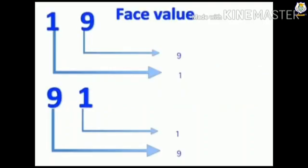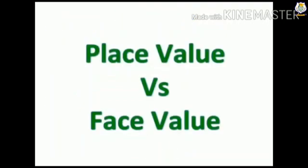The face value will be same value as the digit which does not change by changing the place. Now let's see the face value of 1 and 9 in 19 and 91. Here you can see the face value of 1 and 9 is same as the digit itself.